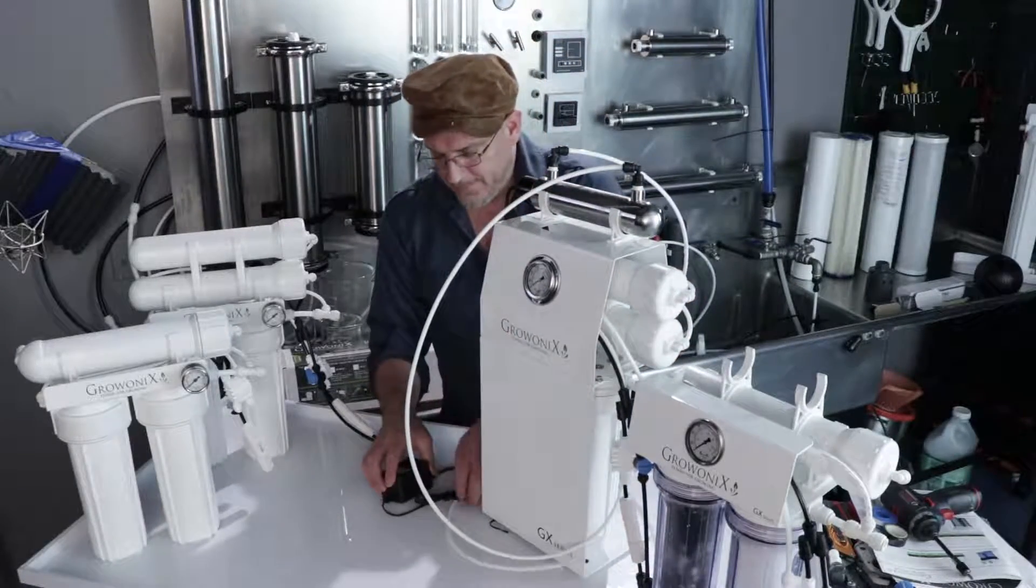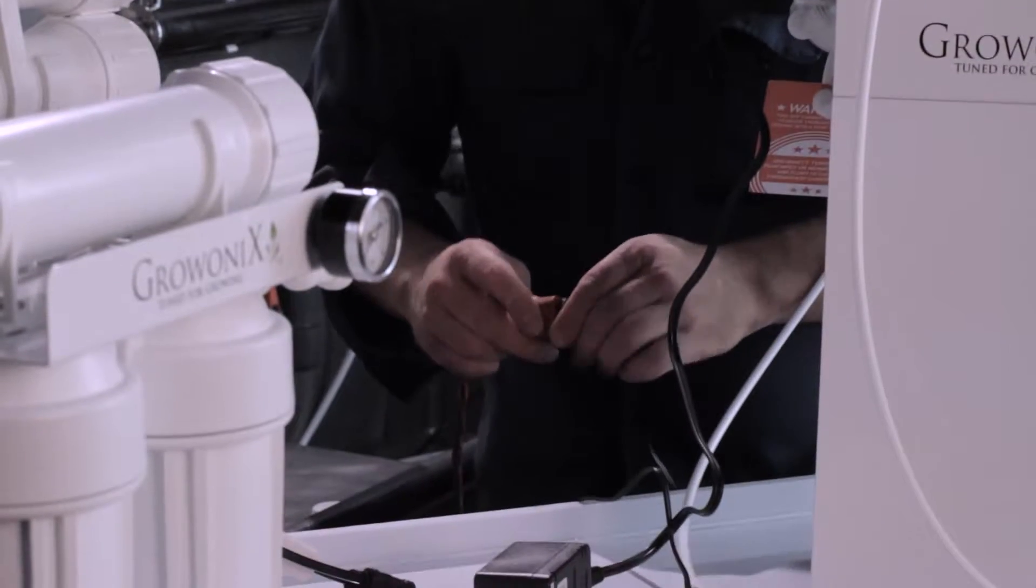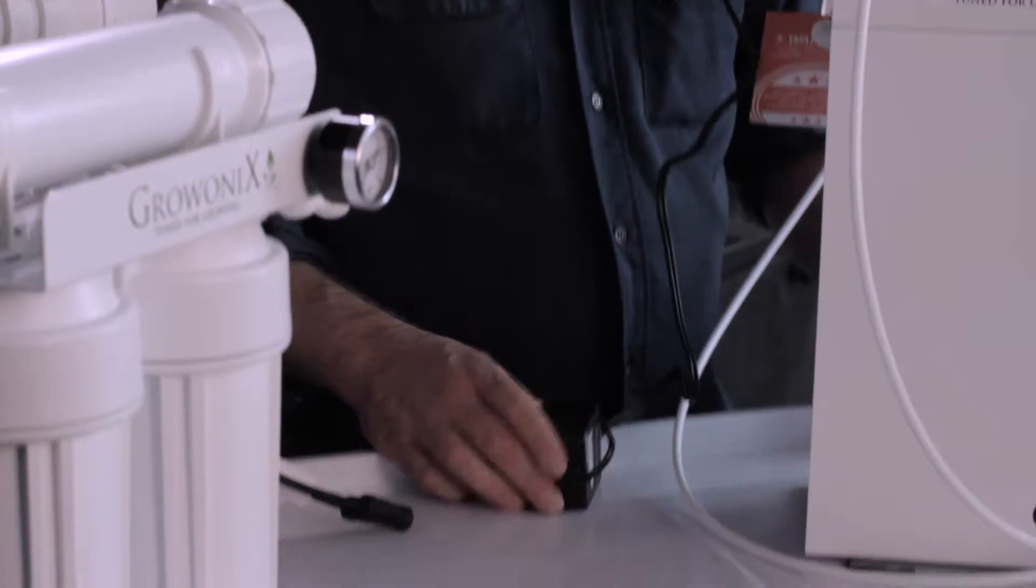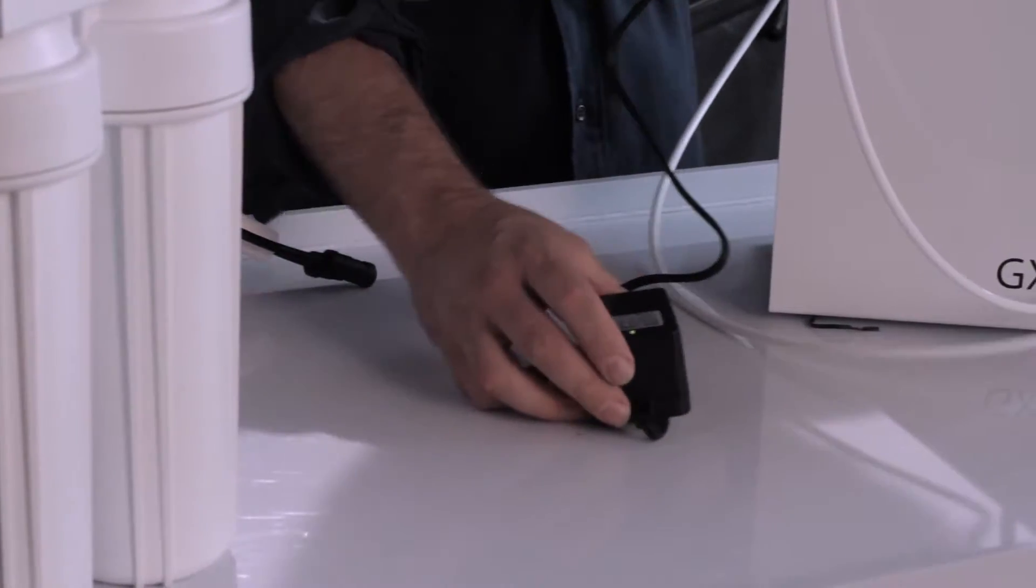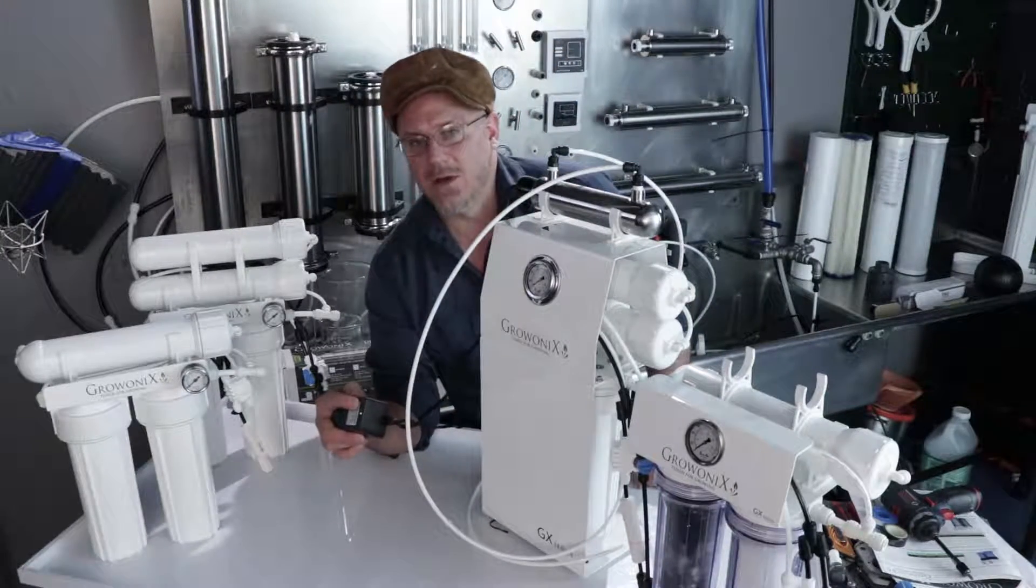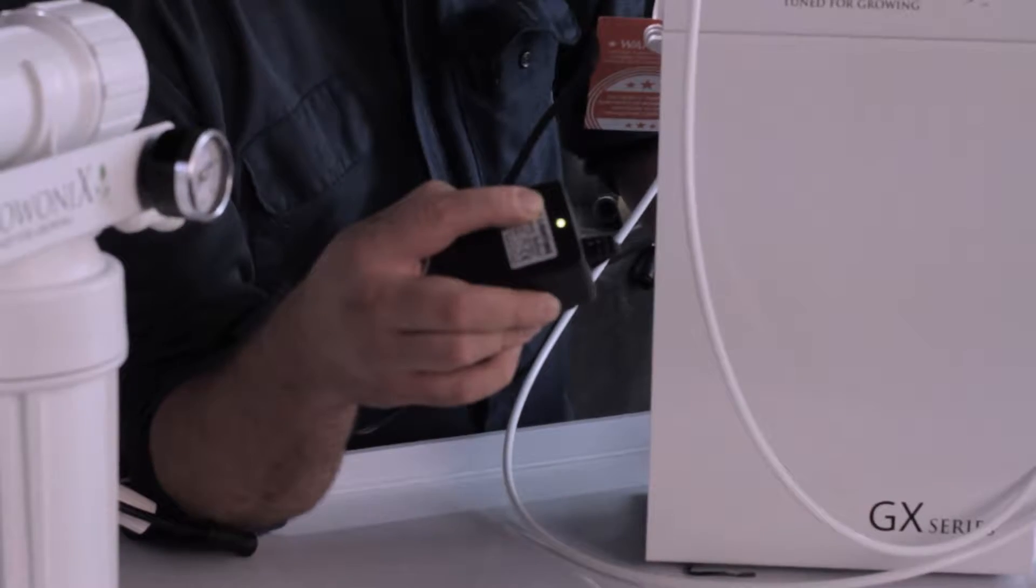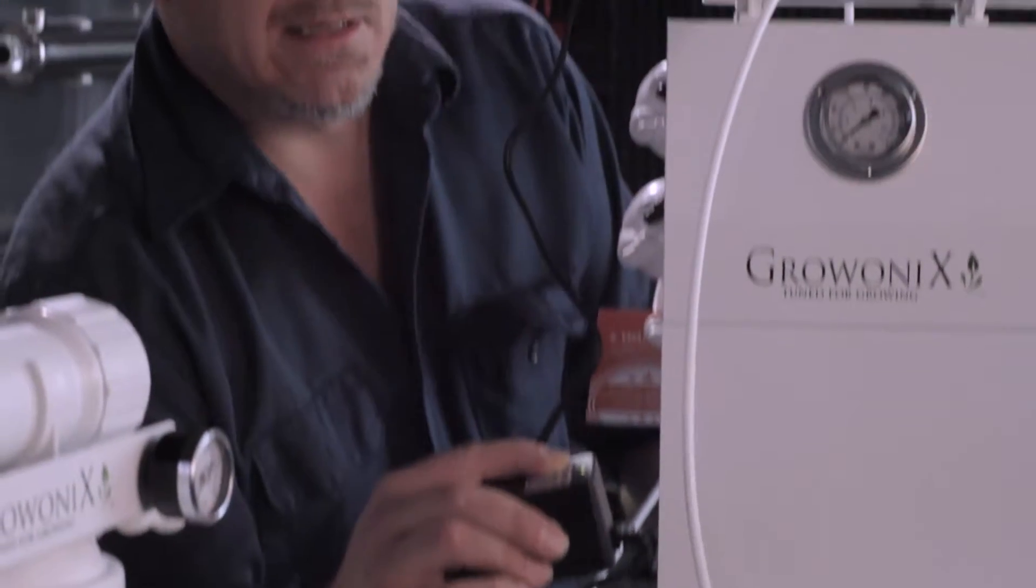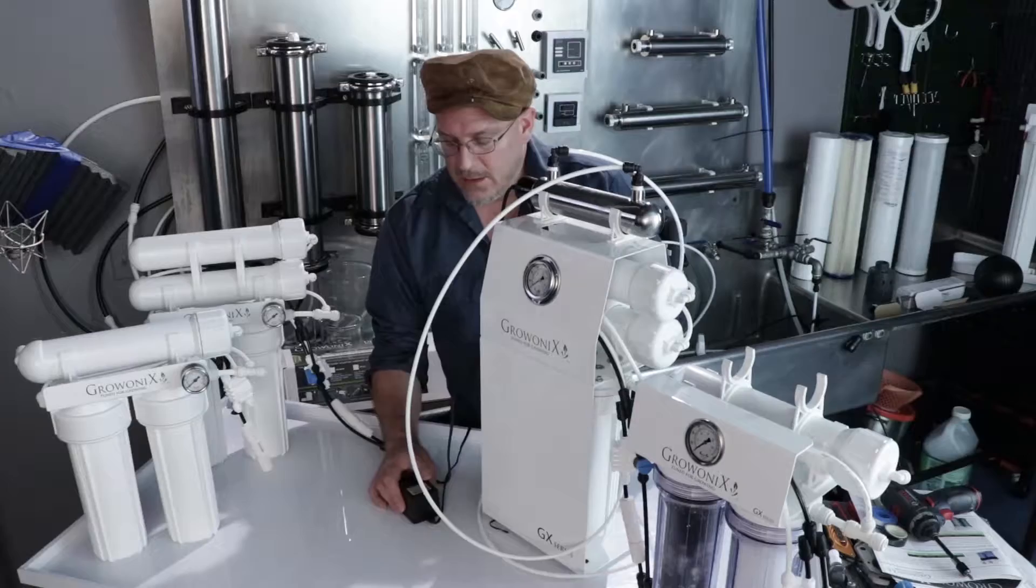Now, the last thing to do is to plug it in. Now, this is very important. You're going to notice on the ballast, a green light came on. That's telling you that the lamp is on. The lamp inside this UV filter.